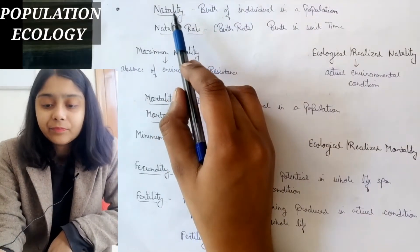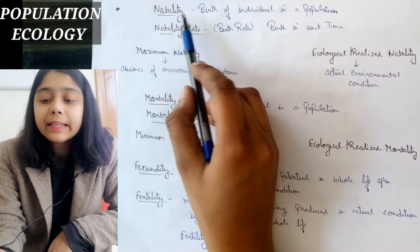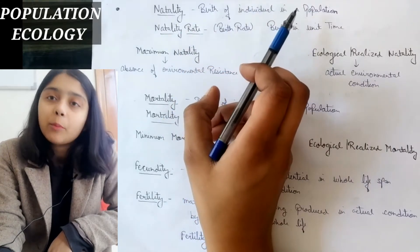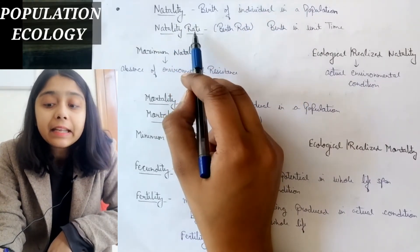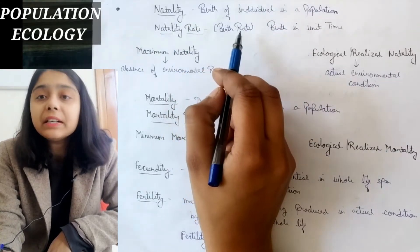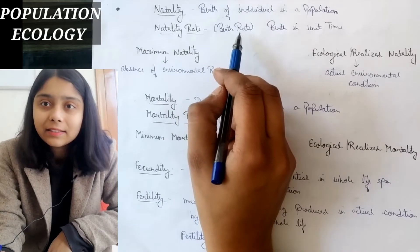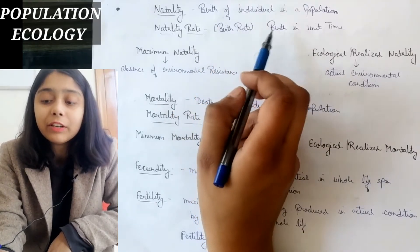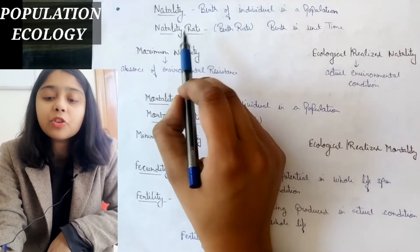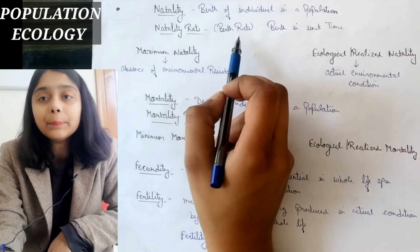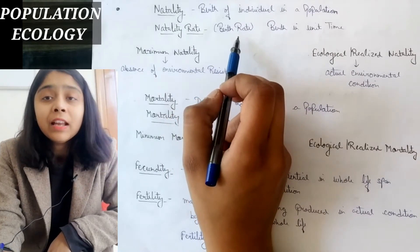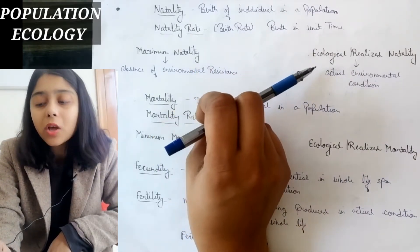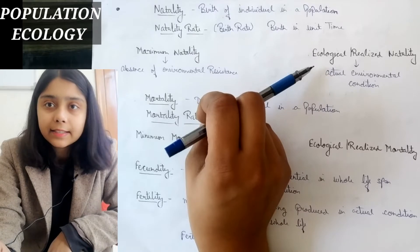First is natality. Natality means birth of individuals in a population, and natality rate means birth rate. There are two terms: maximum natality and ecological realized natality.